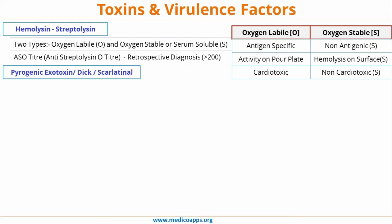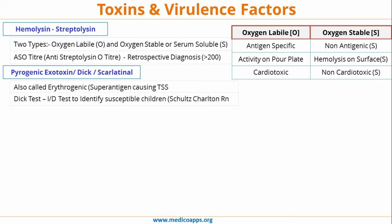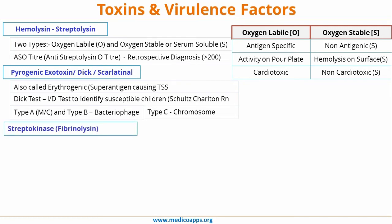Moving forward, the second toxin is pyogenic exotoxin, also known as Dick toxin or scarlatinal toxin, also known as erythrogenic toxin. It is a superantigen causing toxic shock syndrome. The Dick test is an intradermal test to identify susceptible children; the reaction is called the Schultz-Charlton reaction. There are three subtypes: the most common is type A. Type A and type B are coded by bacteriophage, while type C is encoded by the chromosome.